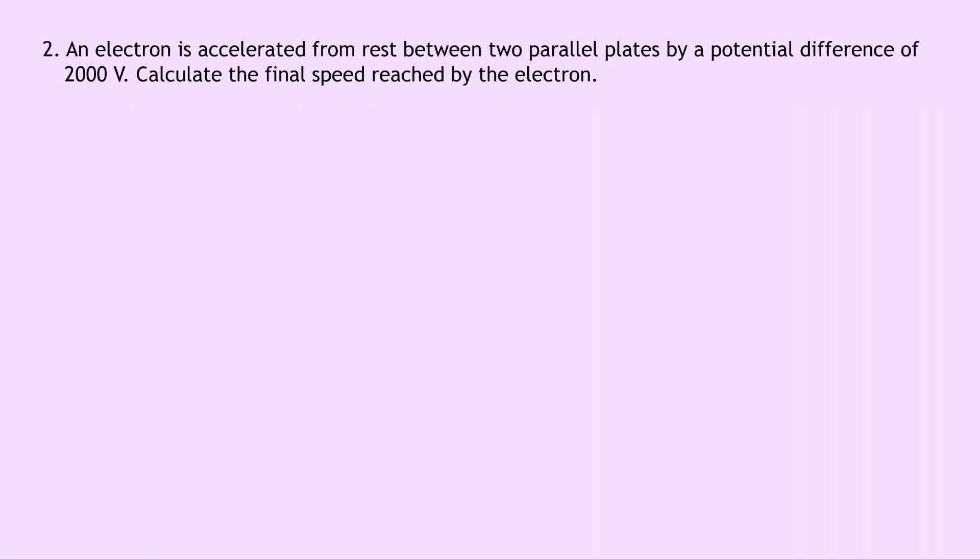Question 2 says that an electron is accelerated from rest between two parallel plates by a potential difference of 2000 volts. Calculate the final speed reached by the electron.